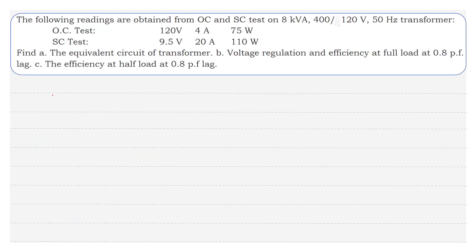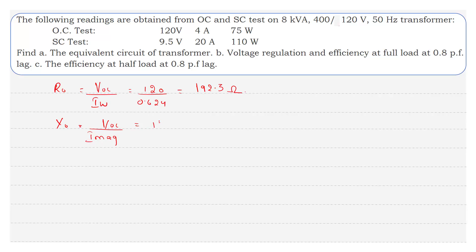Now let us find the shunt parameters R0 and X0. R0 is equal to Voc divided by Iw, where Voc is 120 and Iw is 0.624, giving R0 equal to 192.3 ohms. Similarly, X0 is equal to Voc divided by I-magnetizing, that is 120 divided by 3.95, which equals 30.38 ohms.